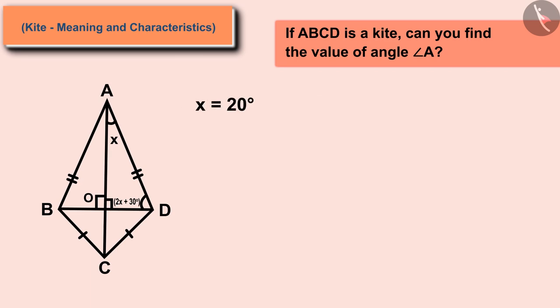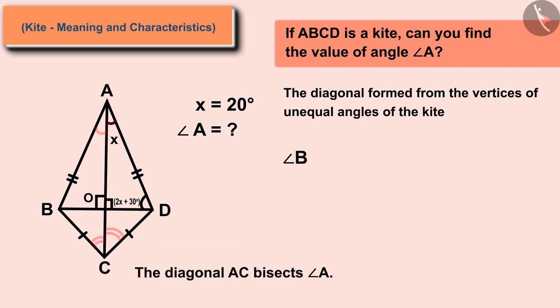In the previous video we learned that the diagonal formed from the vertices of unequal angles of a kite bisects these angles. That is, the angle A will be equal to 2X.